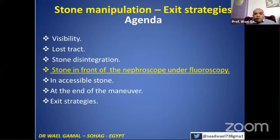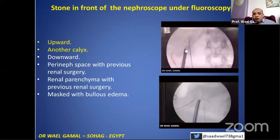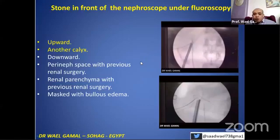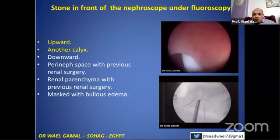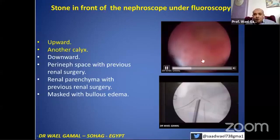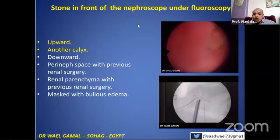Sometimes intraoperatively, you find the stone in front of the nephroscope, but actually you don't see the stone clearly. In this situation, you have to look with the tip of your nephroscope. Here, looking — here is the tip of the stone. This location is deep, with no way to enter with the flexible. To manage a case like this, we use a needle from the outside and try to manipulate the stone. You can see the tip of the needle here.